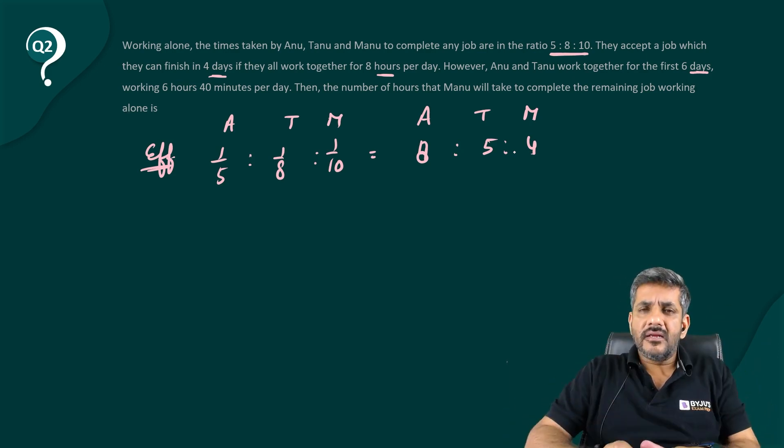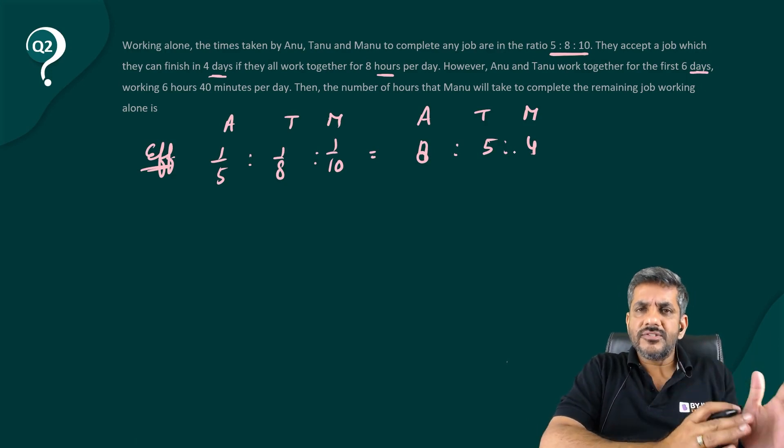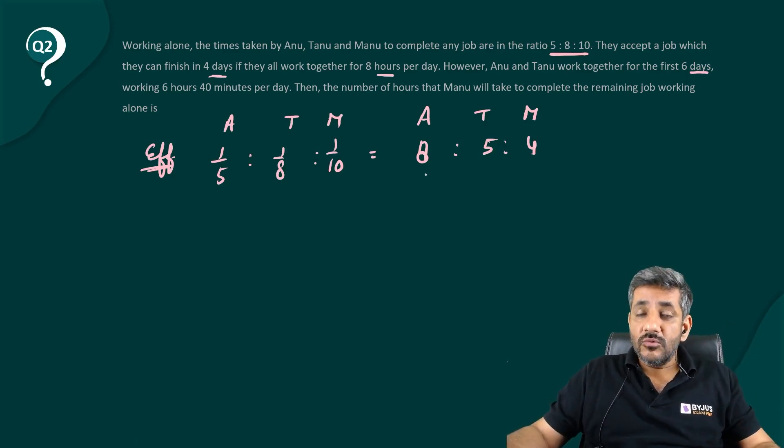Rather, here, talking about a day, I would say better is talk about an hour. So if Anu can make 8 units in an hour, then Tanu can make 5 units in an hour and Manu can make 4 units in an hour. How does it help me? I will tell you that.